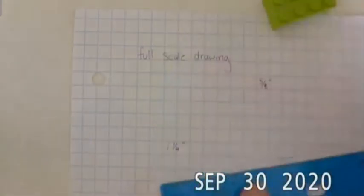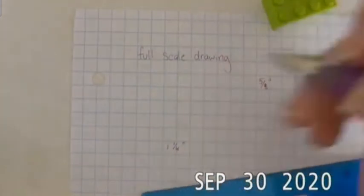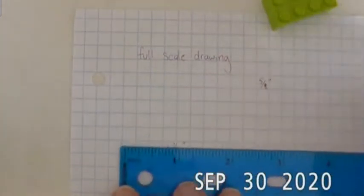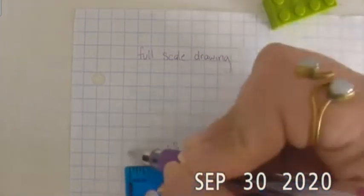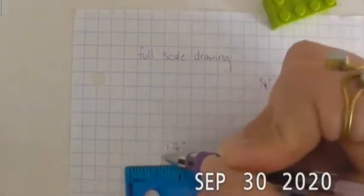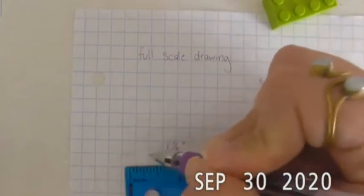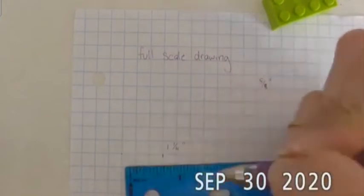Once we know our measurements we can actually start to measure out on our graph paper and draw things. Now we know that our graph paper is quad rule, that means that every four boxes is one inch. So one, two, three, four, that's an inch right there.